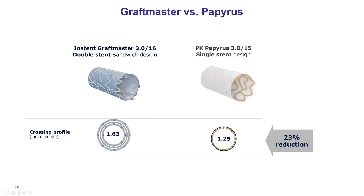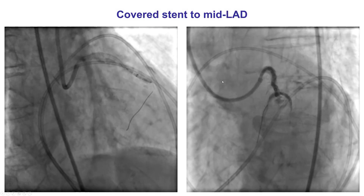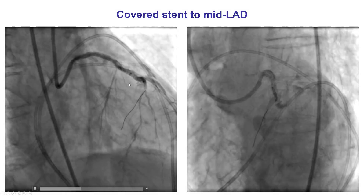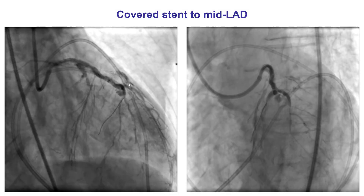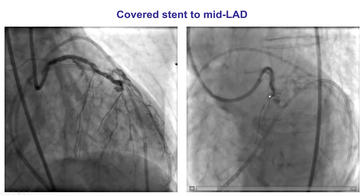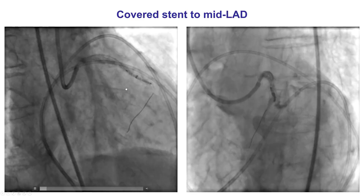A new covered stent — the Papyrus — was going to become available in 2019, which is much lower profile and more flexible than the currently available GraftMaster stent, and would potentially facilitate treating perforations like this given its significantly better deliverability. Delivery was extremely challenging, taking more than an hour with several attempts and intermittent balloon inflations. We were pushing extremely hard, and eventually after many attempts we didn't quite reach the full target but got to the furthest point possible — right at the edge of the perforation.